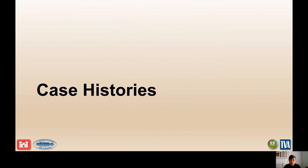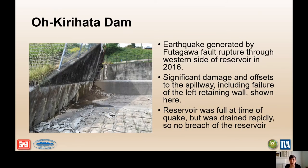For case histories, this dam was impacted by the Futagawa fault rupture earthquake in 2016. There was significant damage to the retaining wall with offsets to the spillway, including failure of the left retaining wall as shown in the photo. The reservoir was full at the time of the earthquake but was drained rapidly and no uncontrolled release of pool occurred.